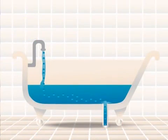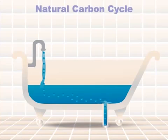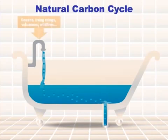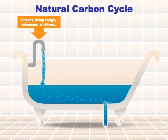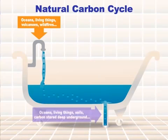Here's another way to think about it. Imagine the atmosphere is like a big bathtub, and carbon dioxide is the water. In the natural carbon cycle, the amount of carbon dioxide that goes into the atmosphere is balanced by the amount that goes out.